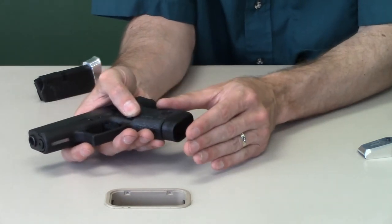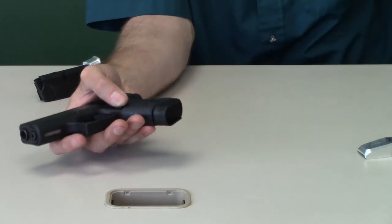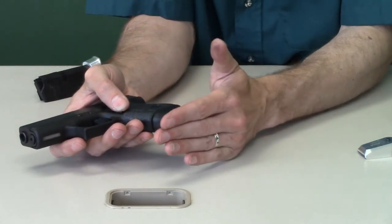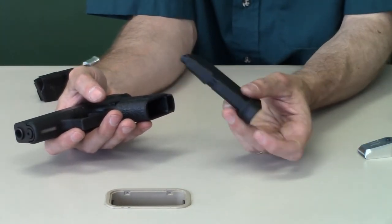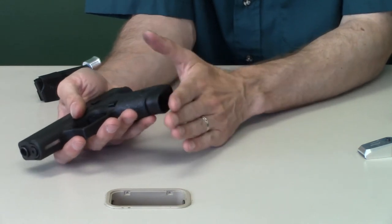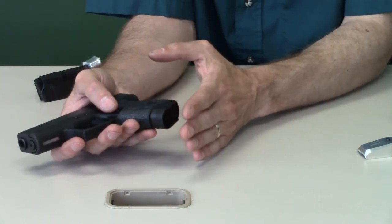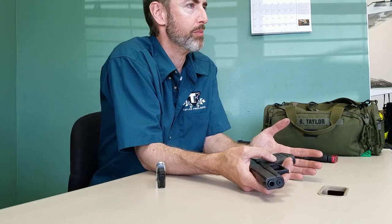But if you put a plus two or plus three extension on it, now we're back into why am I not just carrying a Glock 17? It becomes almost as long as a full size magazine. So in the experimenting we did with this, we discovered that the real problem was the butt. The real area where the gun is going to print and potentially put you in a bad social situation is because of that butt end.